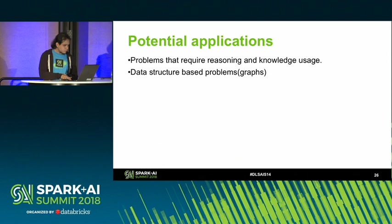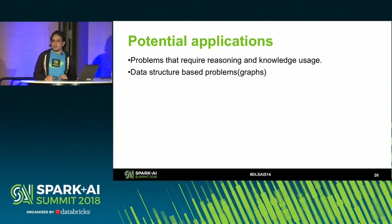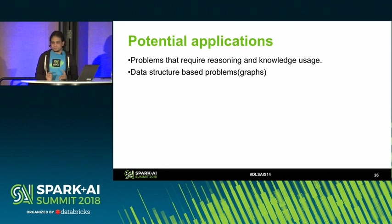Now let's talk about applications. The potential applications are basically problems that require reasoning and knowledge — things a common neural network can't do — and problems in which you have complex data structures like graphs. We'll see some examples using graphs.